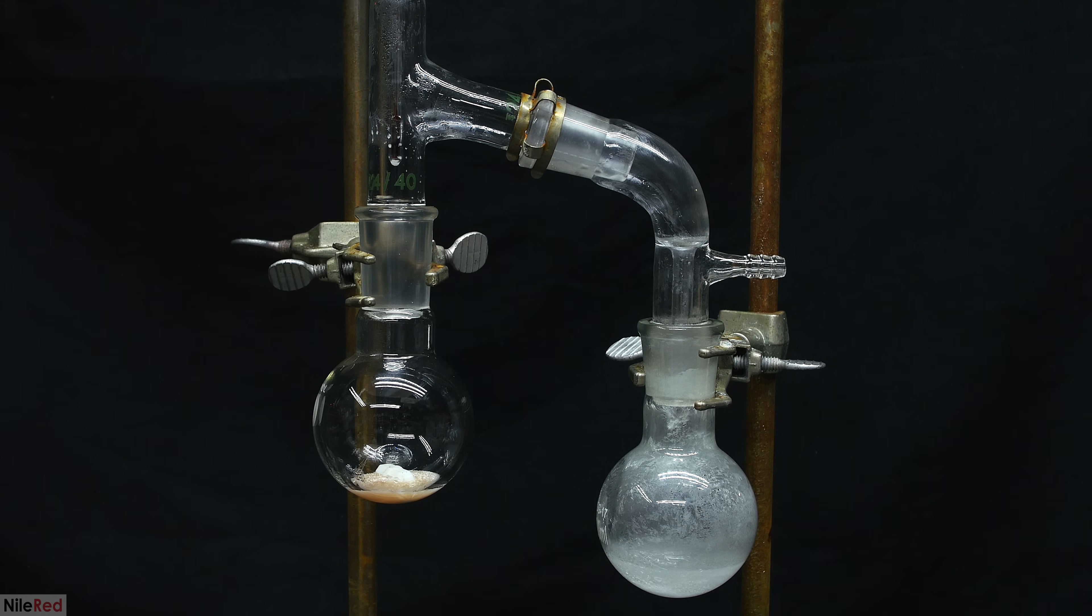In our distillation flask, we're left with a goopy, viscous yellow liquid, and the phenol in our receiving flask has already started to freeze. I wait for the apparatus to cool down before taking it apart, and I'm left with a solid in both the distillation and the receiving flask. There does appear to be a decent amount of solid in the distilling flask, but it should be mostly unreacted salicylic acid.